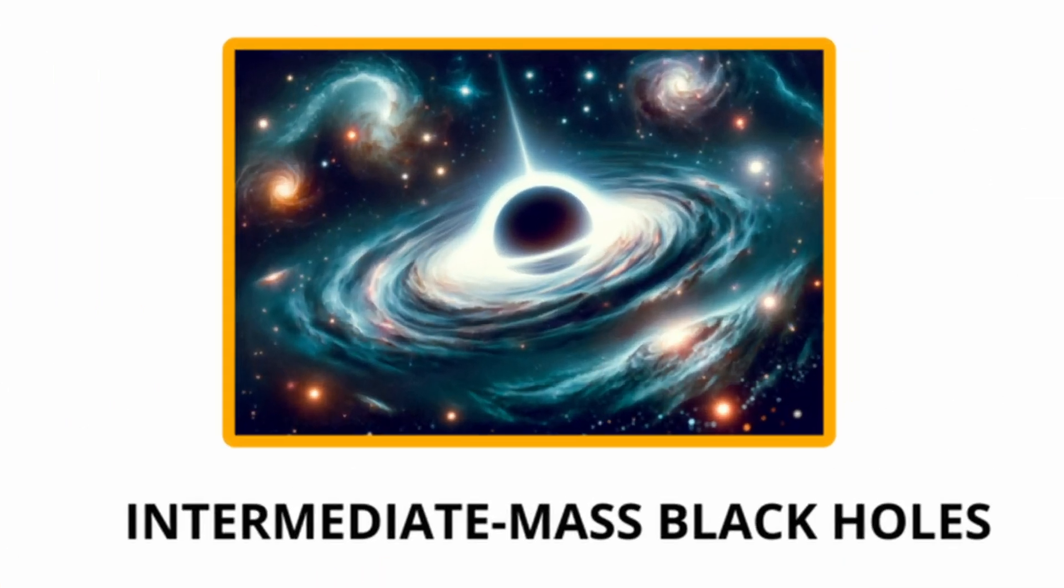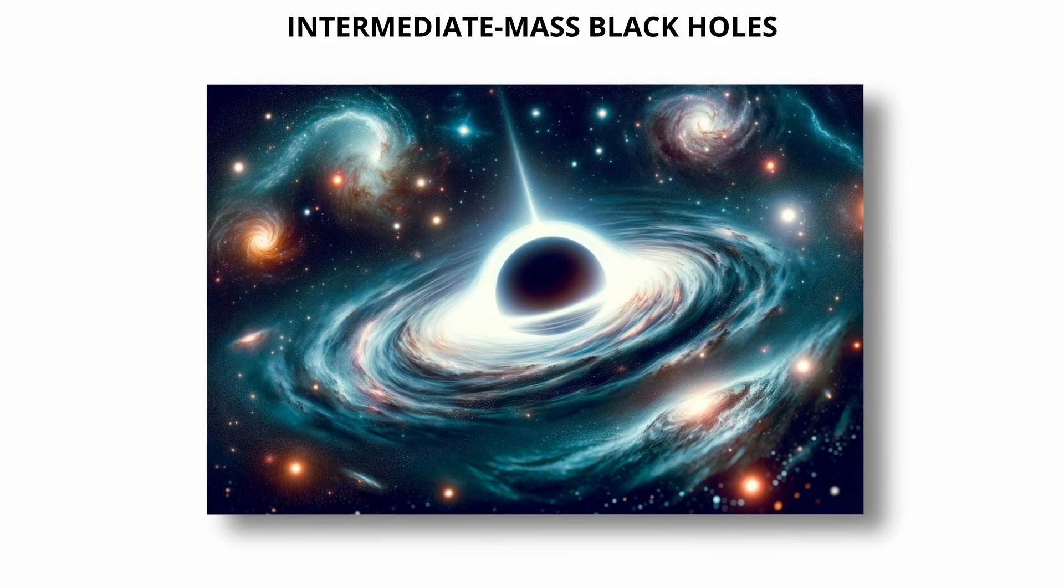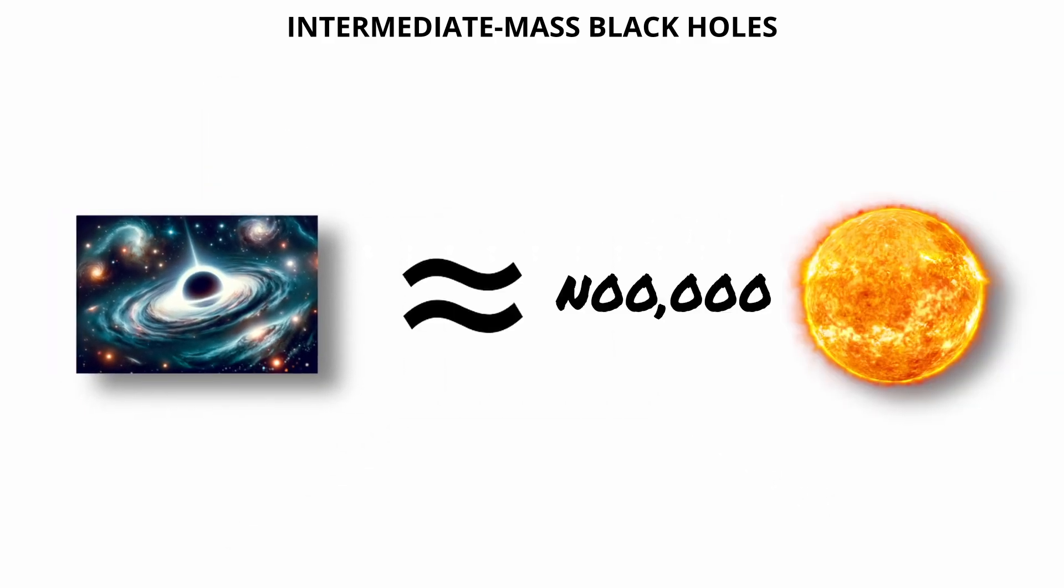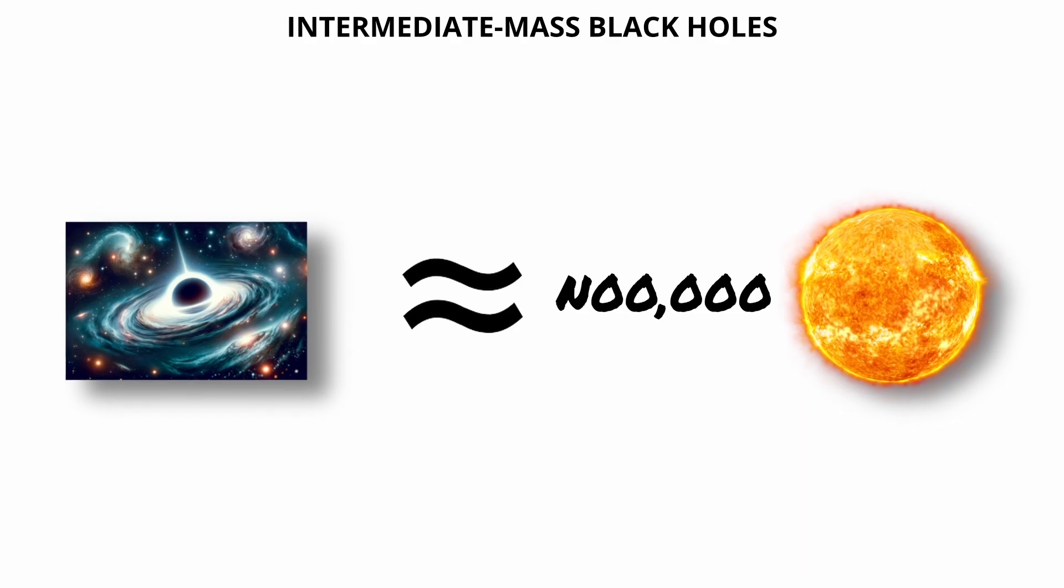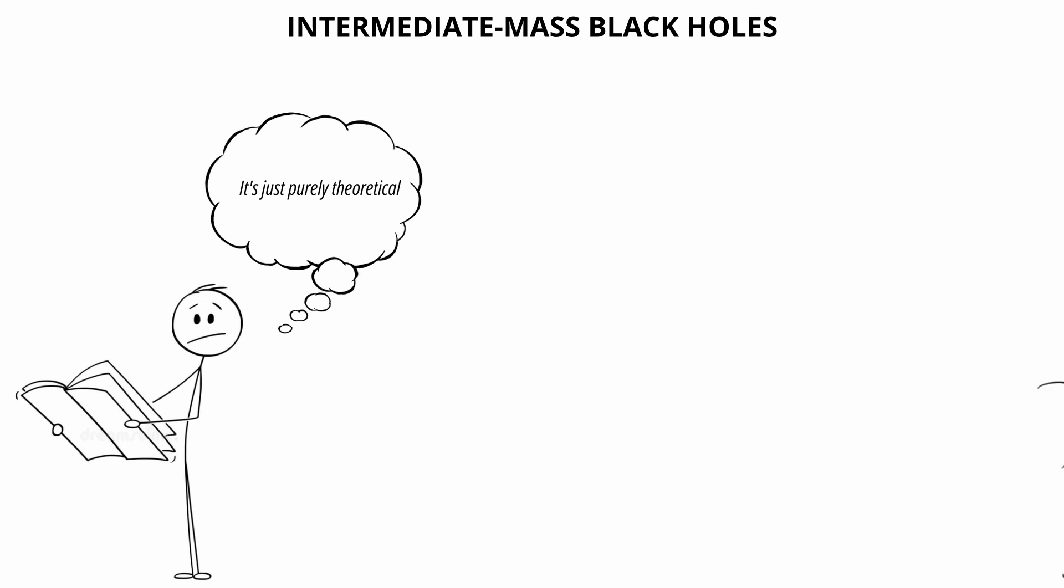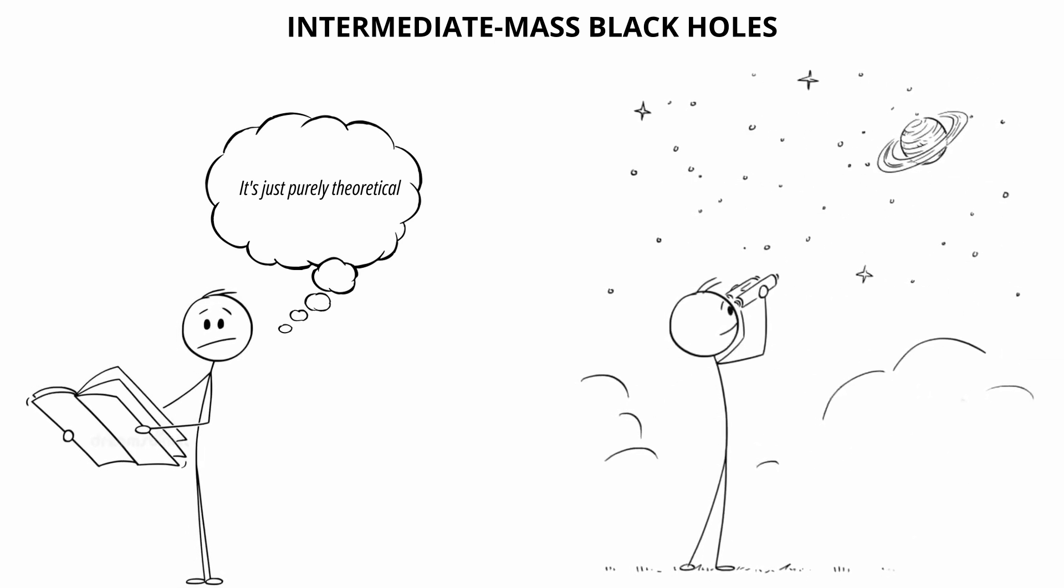Intermediate-mass black holes. Intermediate-mass black holes occupy the mass range between stellar and supermassive black holes, typically spanning from a few hundred to a few hundred thousand solar masses. For decades, these black holes were purely theoretical because no definitive observational evidence confirmed their existence.